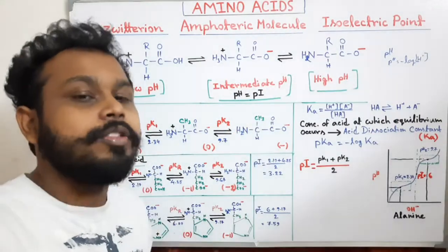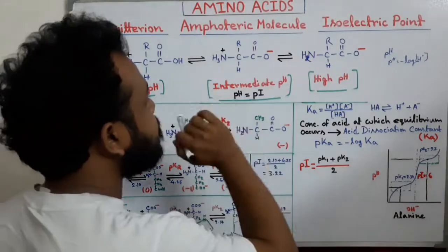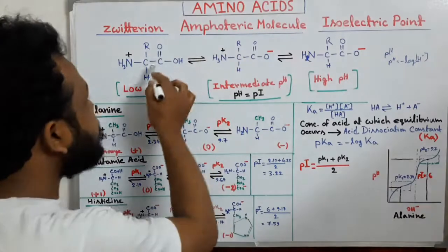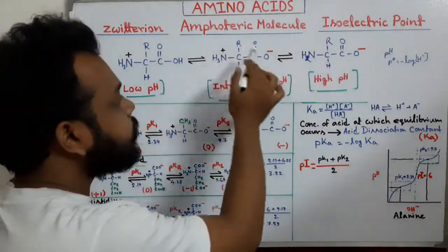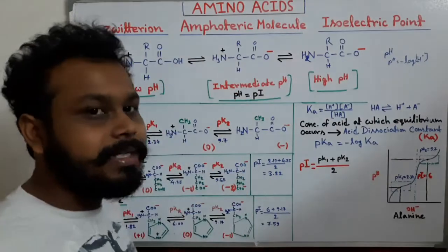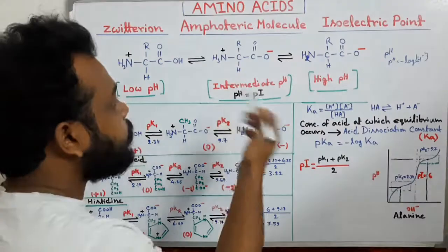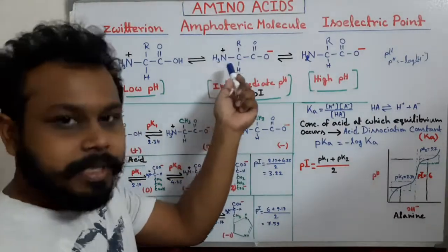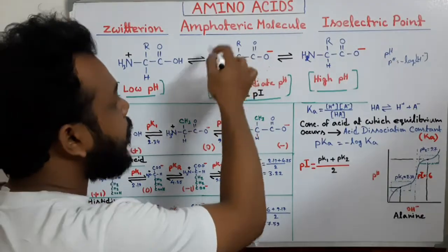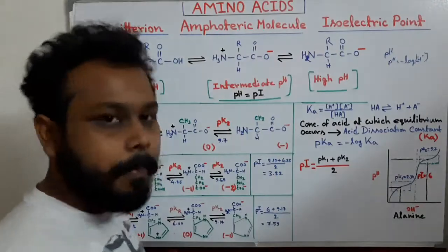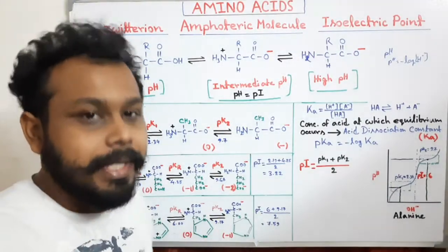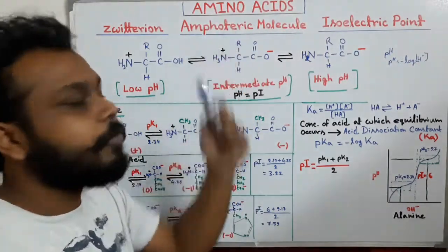The zwitterionic structure can act as both acid and base. When this structure takes a hydrogen ion (H+) from the medium and produces the positively charged structure, it acts as a base. When it releases its hydrogen from the NH3+ group and produces the negatively charged structure, it acts as an acid. Because it can act as both acid and base, amino acid is called an amphoteric molecule.